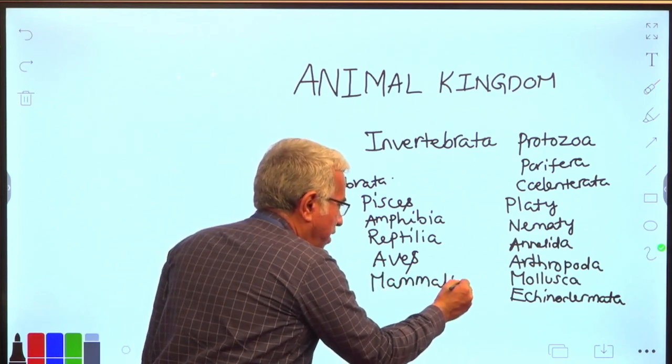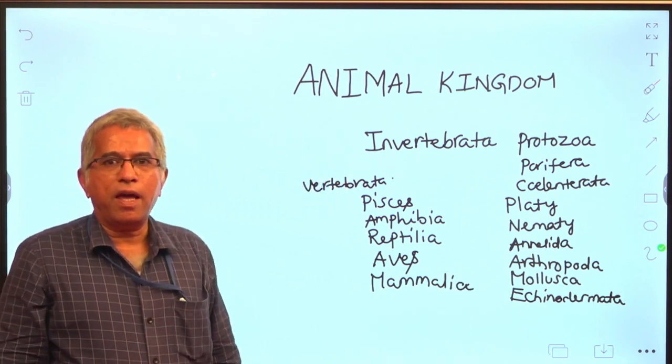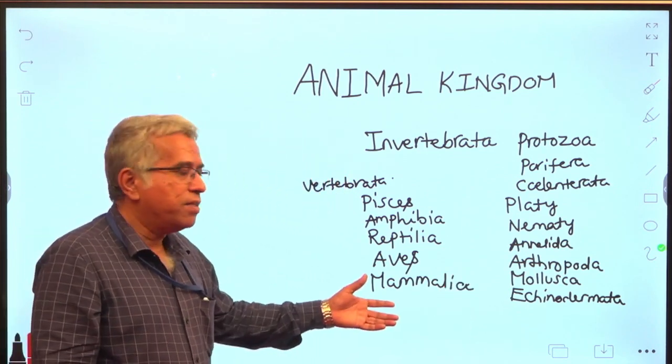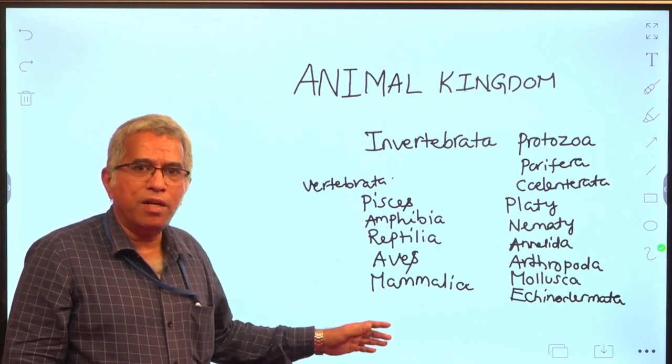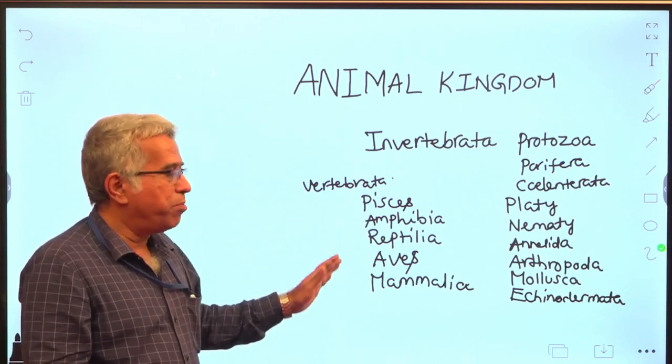Lastly, mammalia. Presence of hair and mammary glands are the characteristic features of this particular class. Human beings also come under this mammalia. This is about the vertebrates.